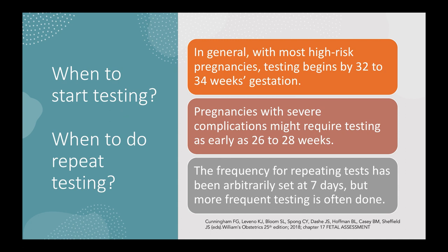Regarding when to start antepartum fetal surveillance: with most high-risk pregnancies, testing should begin by about 32 to 34 weeks of gestation. However, pregnancies with severe complications may require testing as early as 26 to 28 weeks. The frequency for repeat testing has been arbitrarily set at 7 days, but more frequent testing is often done especially for pregnancies with severe complications.